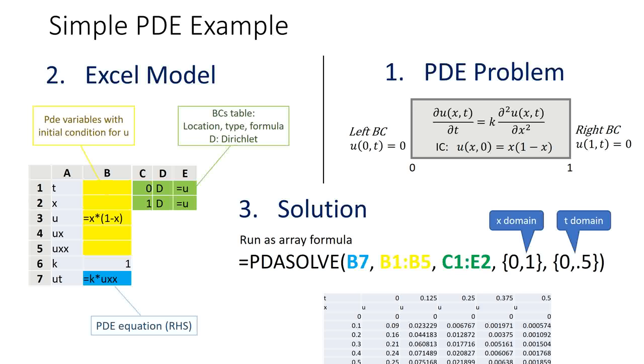We define the initial condition formula X times 1 minus X for U in B3. The right-hand side of the PDE equation is defined in the blue cell B7 which is equal to K times UXX.